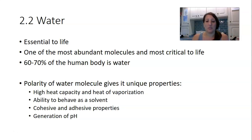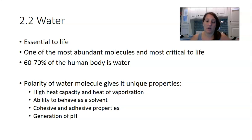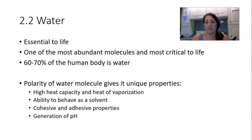Water is essential to biological systems — it's essential to living organisms. In fact, it's one of the most abundant molecules not only on the planet, but also inside of our bodies. For humans, 60 to 70% of the human body is composed of water, and some cells are made of upwards of 90% water. Water has a lot of unique properties, and we're going to go over that list and talk about how these are relevant to living organisms.